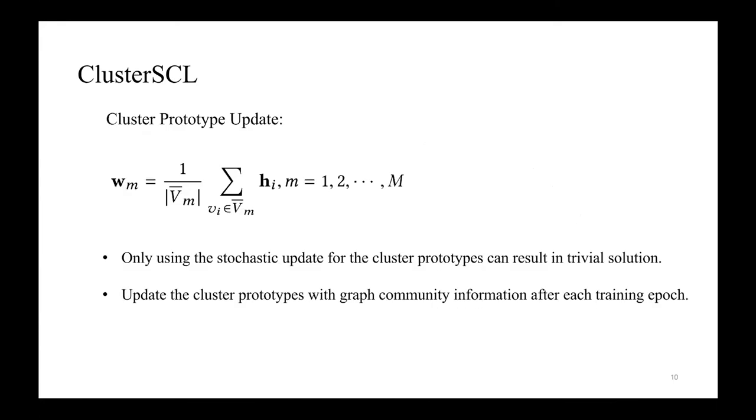We observed that only using the stochastic update for the cluster prototypes could make most of the nodes assigned to the same cluster. So to alleviate this problem, we update the cluster prototypes with graph community information after each training epoch. More specifically, before the training, we perform Metis algorithm to partition the whole graph into several graph communities. After each training epoch, we will average the node embeddings in each graph community to update the corresponding cluster prototype.